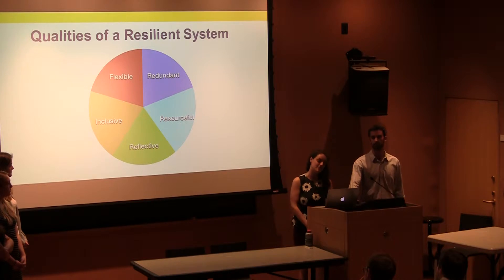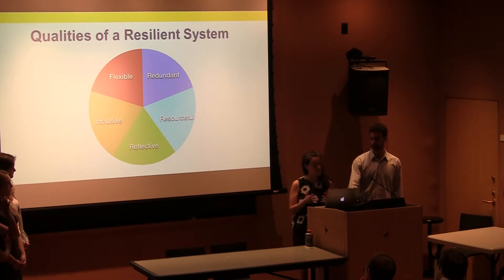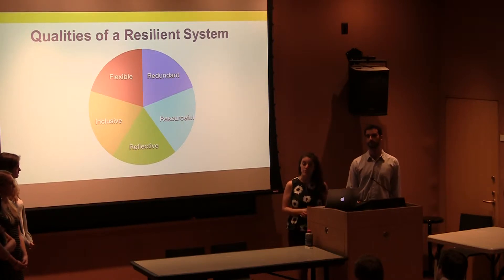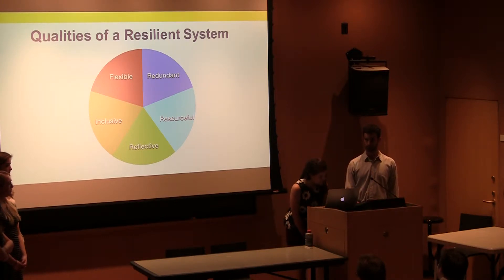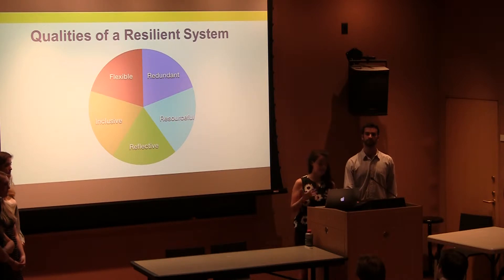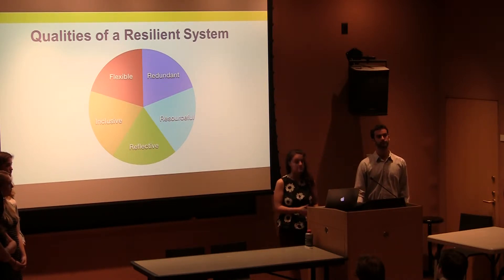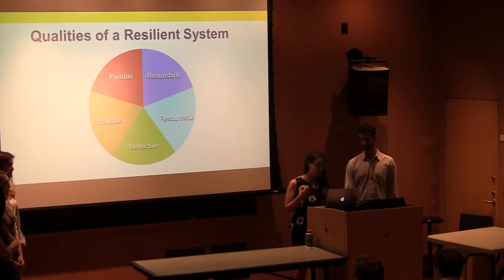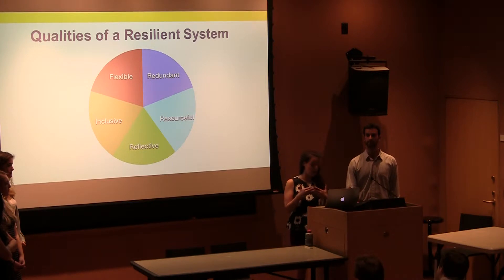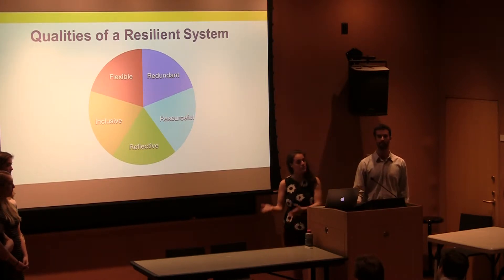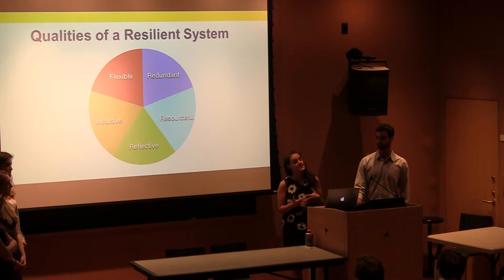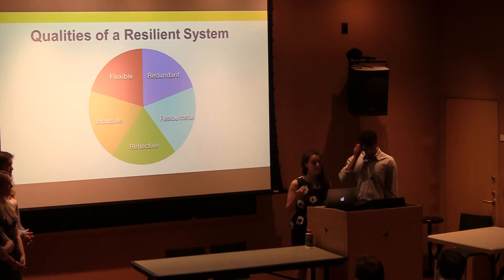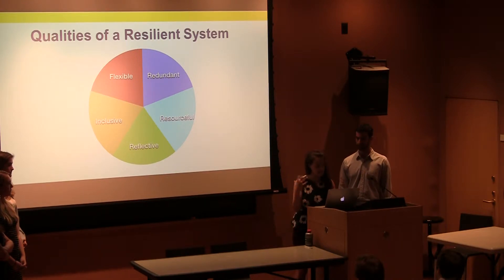What are the qualities of a resilient system? First, a system must be redundant — many aspects should perform the same function so if one fails, others continue. A resilient system should also be resourceful, cost-effective, using the least energy and resources for the most protection. A system should be reflective, able to continuously evolve. It should be inclusive, accounting for as many people as possible, especially those with more pronounced vulnerabilities. Finally, a resilient system should be flexible, able to change and adapt to any disruptions, often by decentralizing the system.